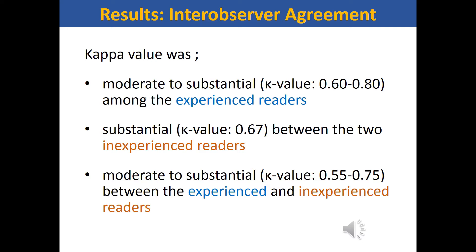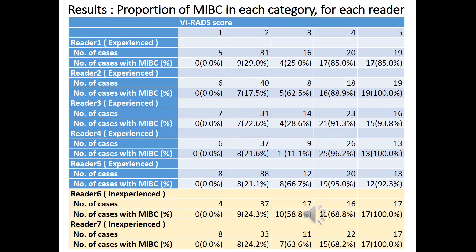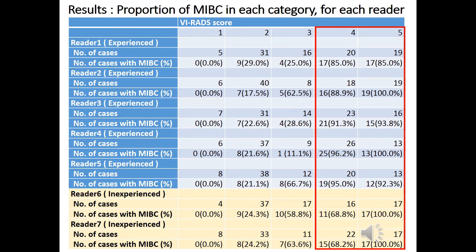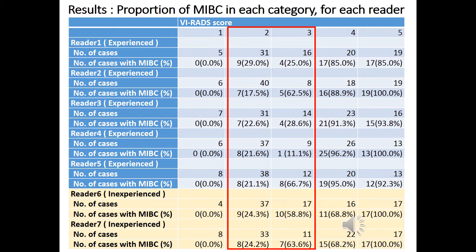KAPPA value was moderate to substantial among the experienced readers, substantial between the two inexperienced readers, and moderate to substantial between the experienced and inexperienced readers. This table shows the proportion of MIBCs in each category for each reader. No cases scored as VRATS 1 had MIBC. With experienced readers, MIBC is highly likely to be present in lesions scored as VRATS 4 or above. Some cases with VRATS 2 had MIBC — 21.1% to 29.0% — and the frequency of MIBC in VRATS 3 varied even among experienced readers, from 11.1% to 66.7%.